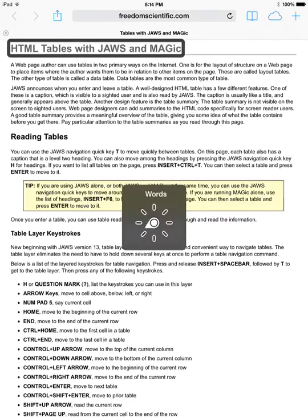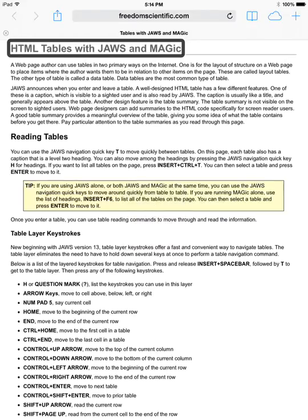Cycling through the rotor options: Language, Character, Words, Lines, Speech Rate, Container, Headings, Links, Form Control, Tables — and VoiceOver tells me there are eight tables. Now I can swipe up or down to cycle through the tables.